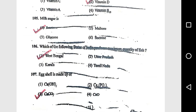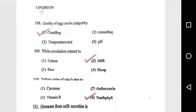Question 106: Which state of India produces the maximum quantity of fish? West Bengal. Question 107: Egg shell is made up of CaCO3. Question 108: Quality of egg can be judged by candling.